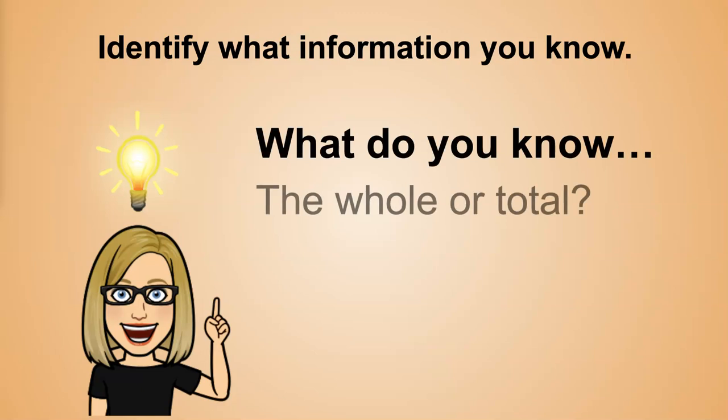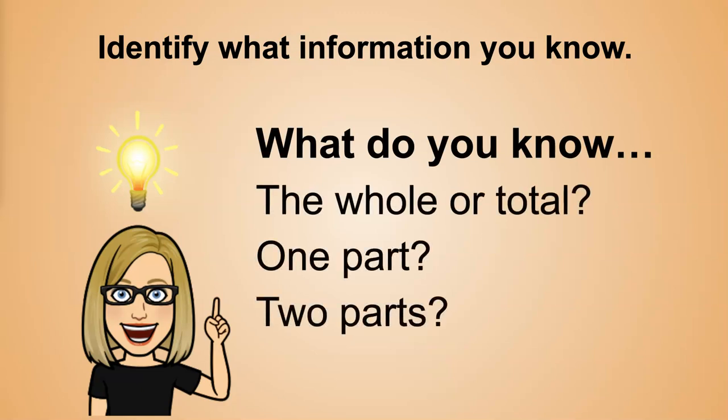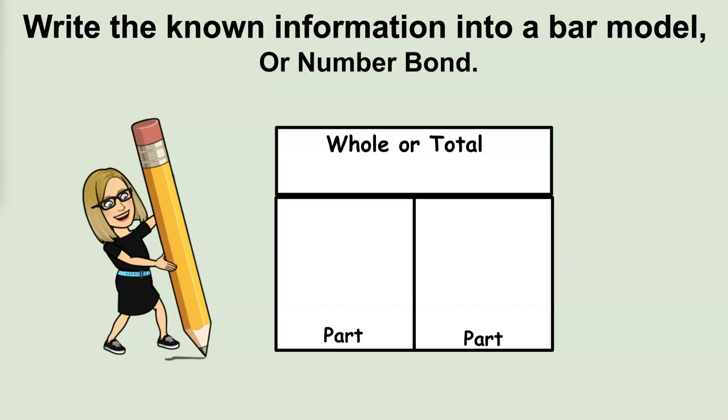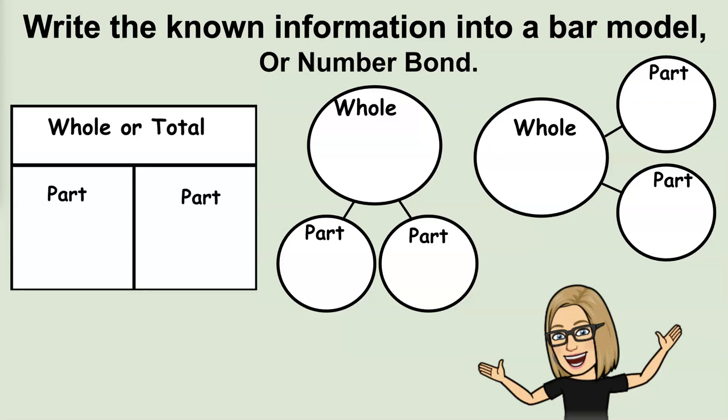Identify what information you know. What do you know? The whole or total? One part? Two parts? Write the known information into a bar model or number bond. All of these are ways to represent the relationship between the parts and the whole. And they're a critical step in solving any word problem.